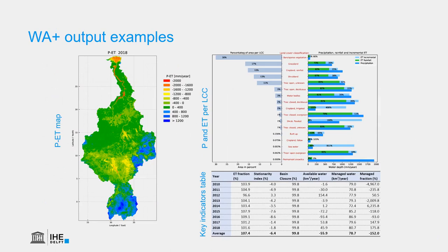Some Water Accounting Plus output examples come from the FAO Water Accounting report on the Nile River basin. The map shows precipitation minus evapotranspiration for the year 2018, revealing where water is generated and where it is consumed. The bar chart shows precipitation and evapotranspiration per land cover class, indicating which land covers generate runoff or consume more water than available through precipitation. The table shows key indicators for the basin water resources status, which we will discuss in the last unit of this course.